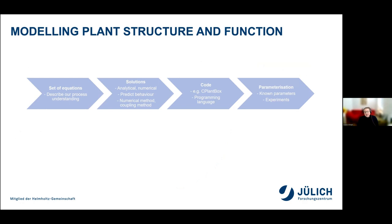For modeling plant structure and function within its environment, we start from a set of mathematical equations that describe our process understanding. From these equations, we can derive analytical or numerical solutions to predict the behavior of the system. At this stage, we make choices of numerical scheme and coupling methods that may influence the accuracy or convergence of our model. After that, we make further technical decisions, including the programming language. The code is then given a name — in our case, it's called C-PlantBox. But I would like to stress that the code is just a tool to solve the model; the important part is actually the mathematical equations.